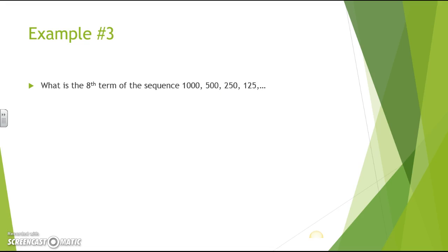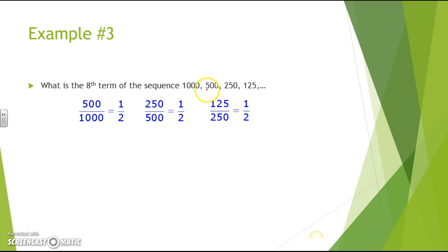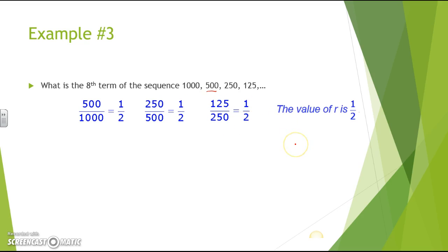The next example asks: what is the 8th term of the sequence 1,000, 500, 250, and 125? To find the common ratio, divide each term by the one before it: 500 divided by 1,000 gives 1 half, 250 divided by 500 gives 1 half, and 125 divided by 250 gives 1 half. So the common ratio r is 1 half.